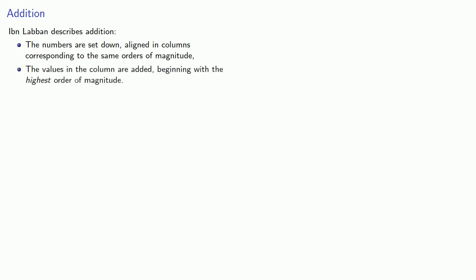For addition, Ibn Laban describes the following procedure. The numbers are set down, aligned in columns corresponding to the same orders of magnitude. The values in the columns are added, beginning with the highest order of magnitude. And as numbers are used, they are replaced.